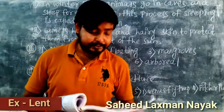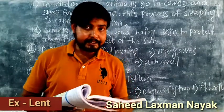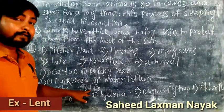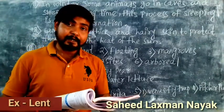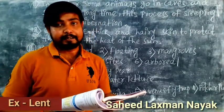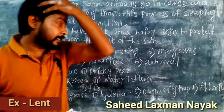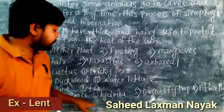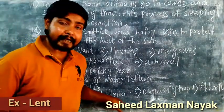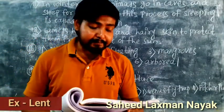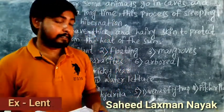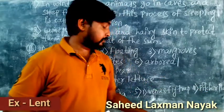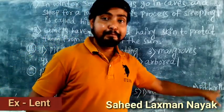Number three — plants growing in hilly areas: pine and fir. Number four — plants growing under water: eel grass and hydrilla. Number five — insectivorous plants: Venus flytrap and pitcher plant.